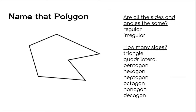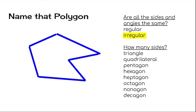Let's put all those words together and try to name these polygons. First, we'll ask ourselves: are all the sides and angles the same? On this polygon, they're not — so we call it an irregular polygon. And then we have to count up the sides. If it has a lot of sides, you might want to keep track somehow. I'm going to mark them on the screen as you count. So how many sides are there? That's right — there are six sides. And we call a six-sided shape a hexagon. So this polygon is an irregular hexagon.